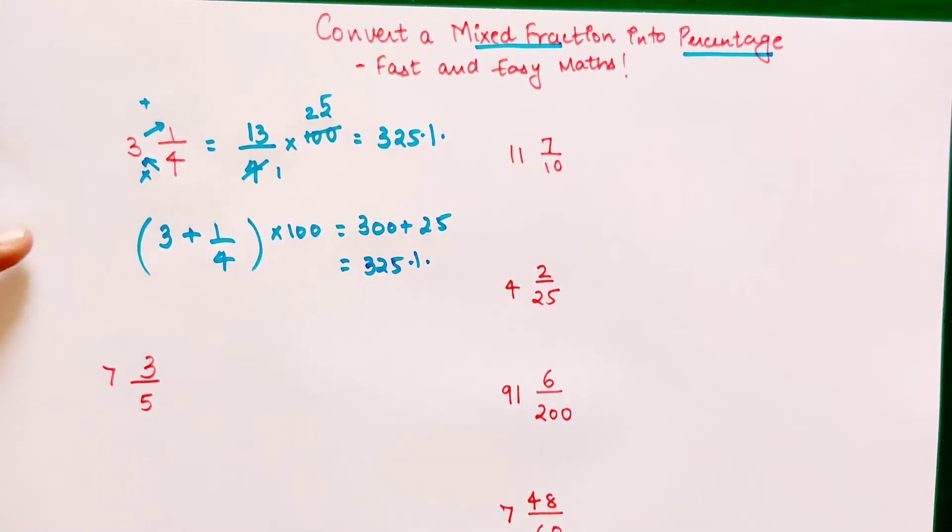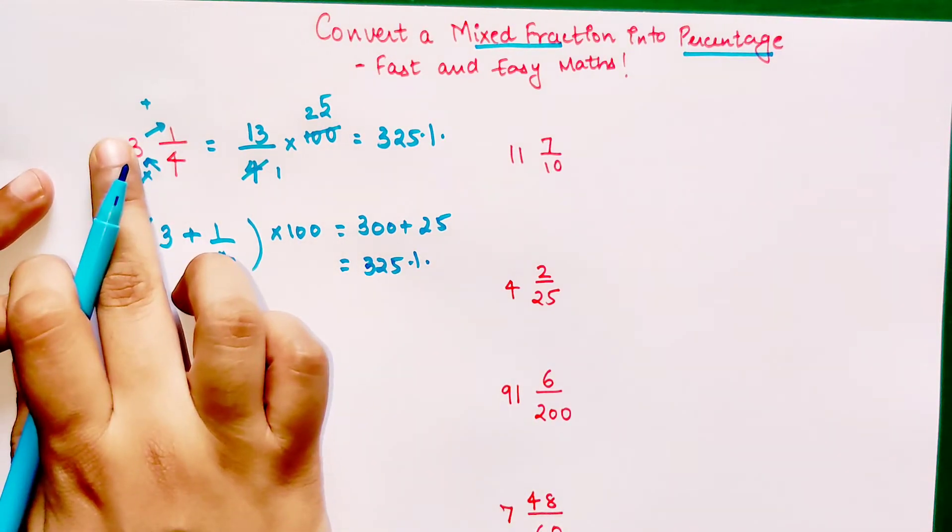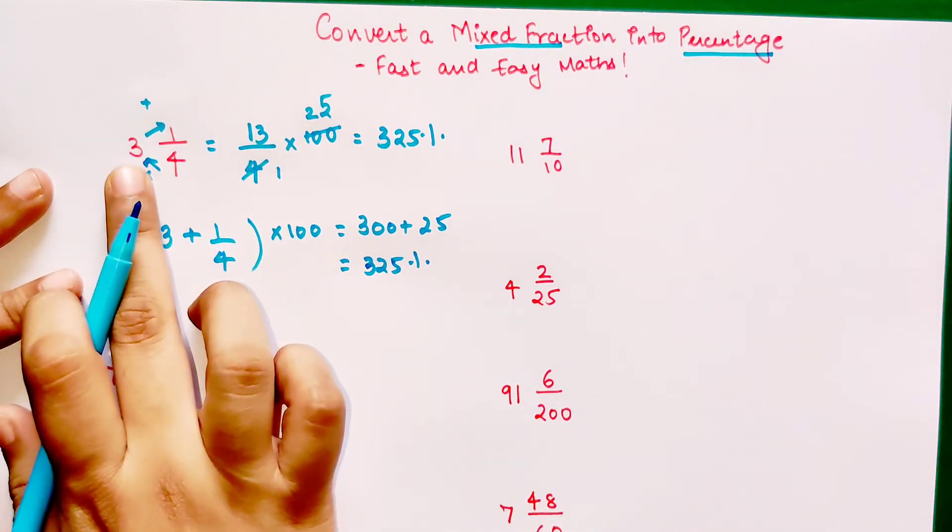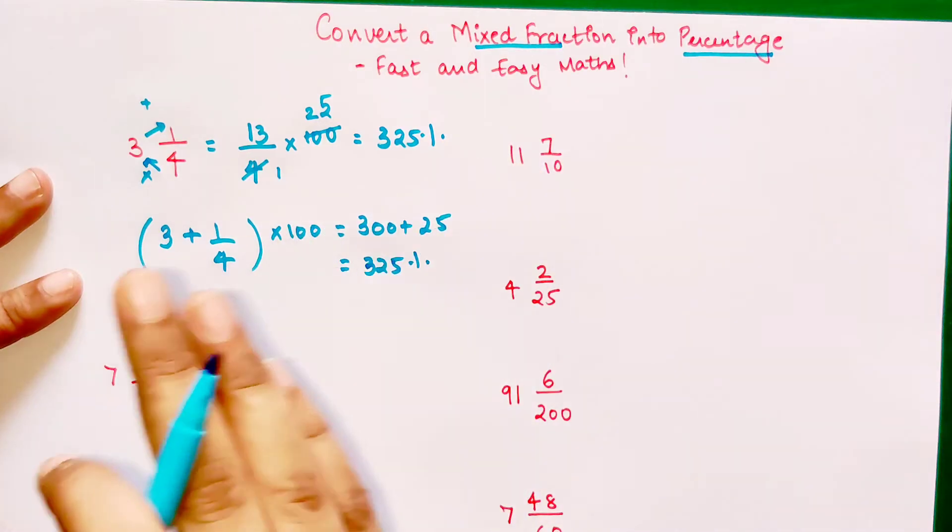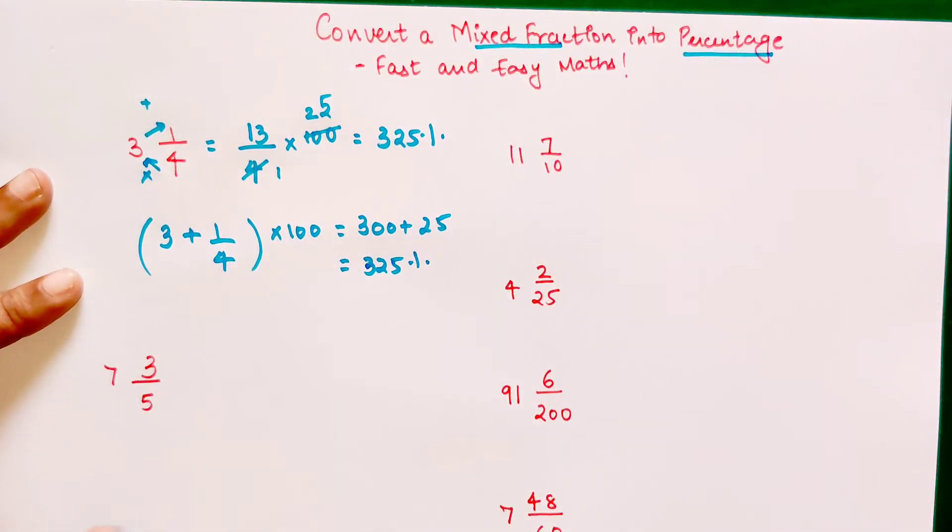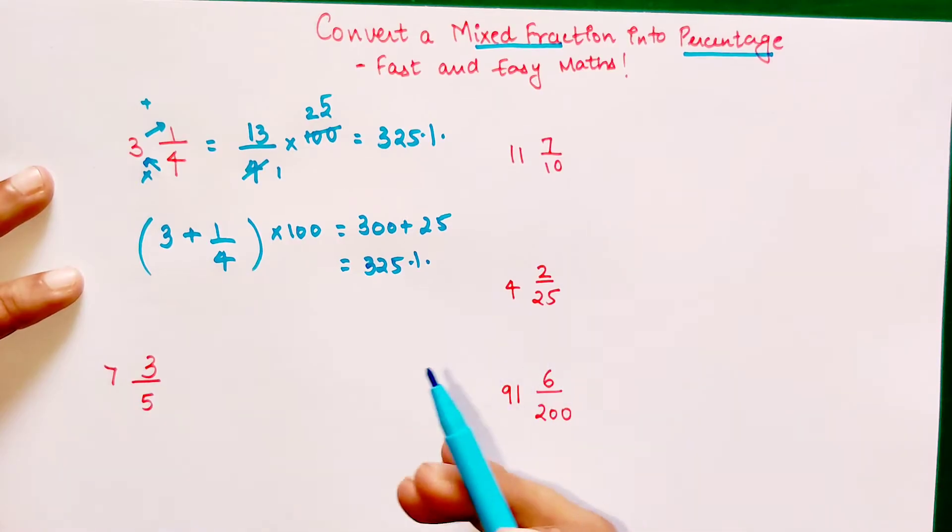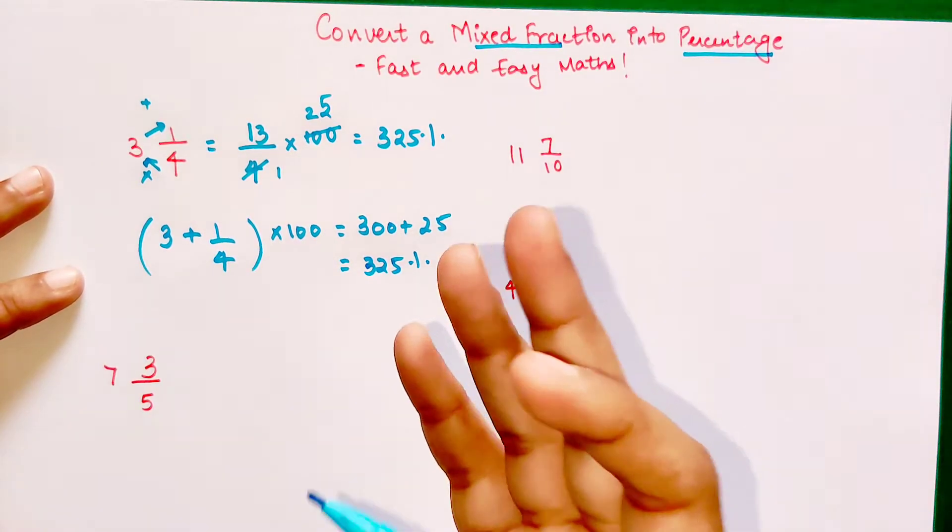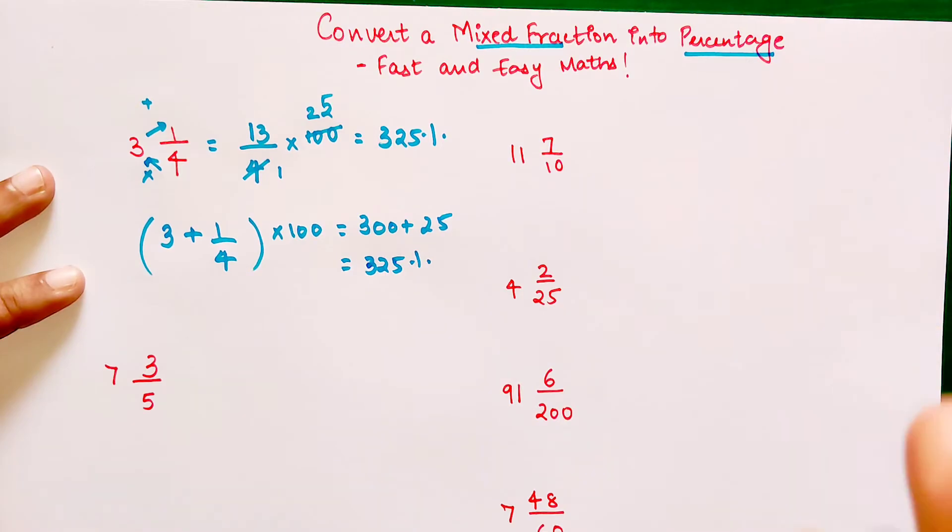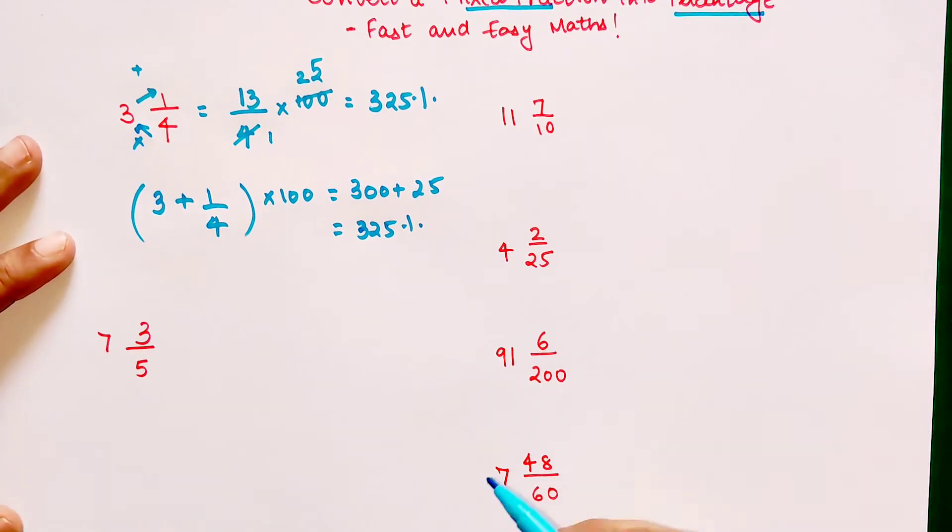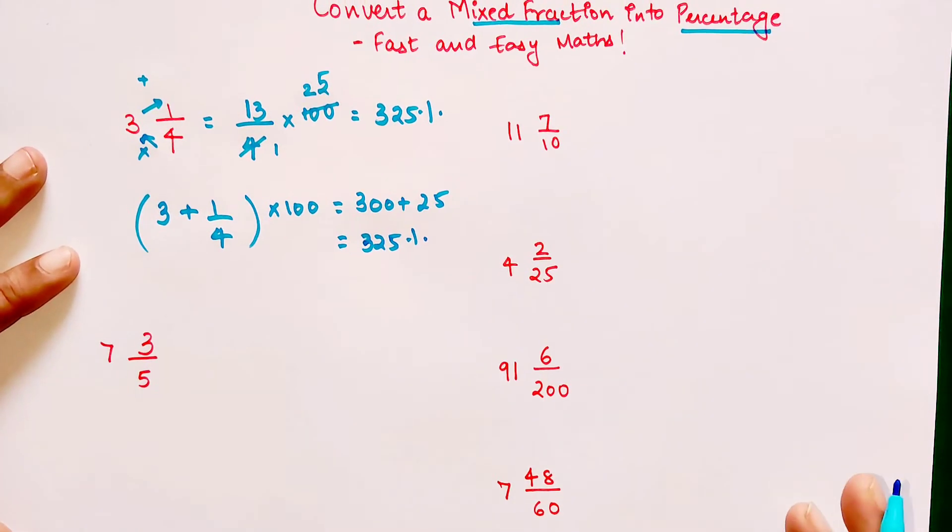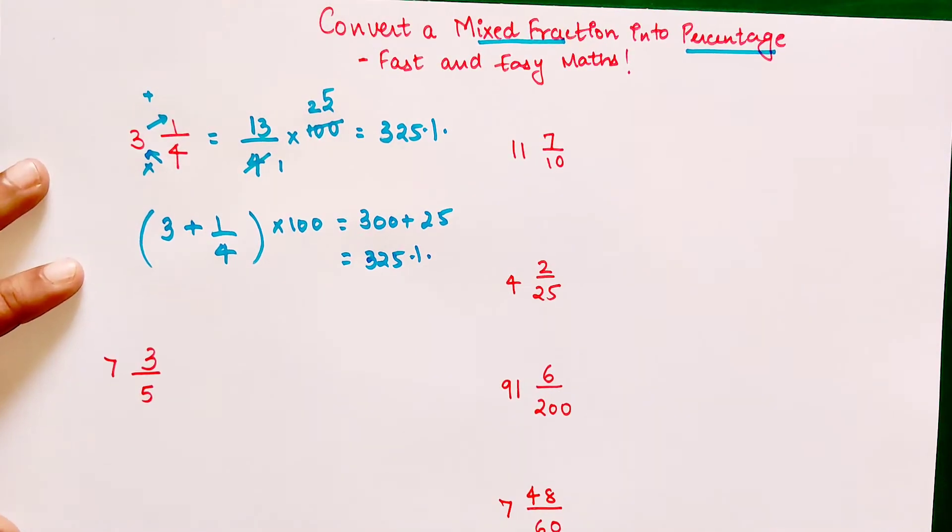Let's quickly understand what we did. Basically, whatever is the integer part of your mixed fraction, you just multiply that by 100. So all the integer parts you just add two zeros in front of it, and then the fraction part. There might be cases where your fractions have a denominator which are easily getting cancelled by 100, and in certain cases if it's not getting cancelled, I will teach you.